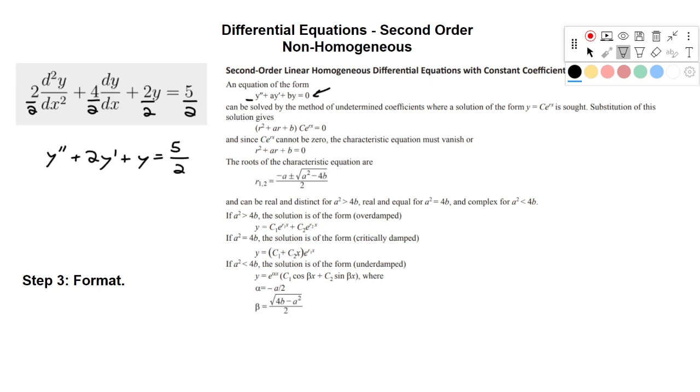Now you'll notice that in the formatting here, we're dealing with a homogeneous equation. It equals 0. So for now, what we're going to do is we're only going to solve the homogeneous half of this equation. So we'll set this equal to 0.